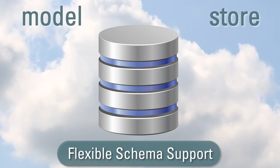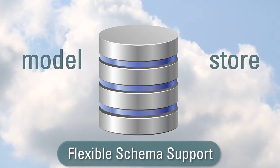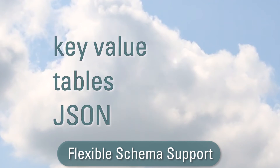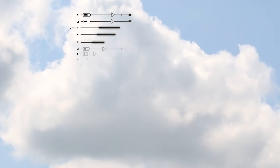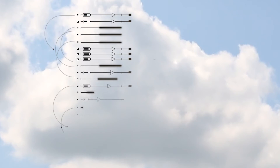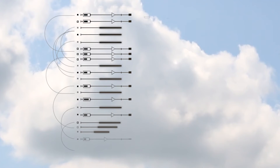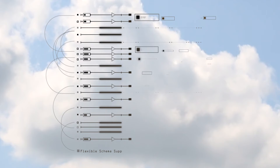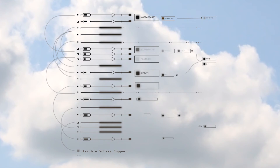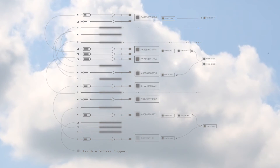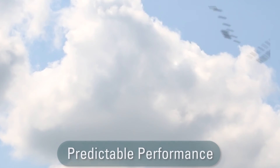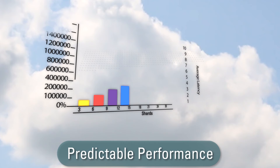You get flexible schema support — the ability to model and store data in application-aligned types including key value, tables, and JSON. The ability to define and evolve schema dynamically at runtime, as well as agile development and continuous deployment.